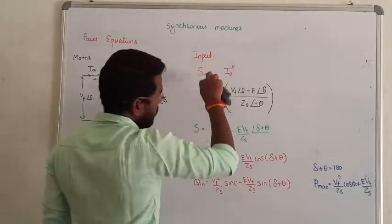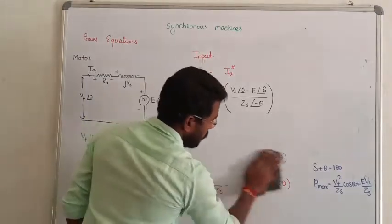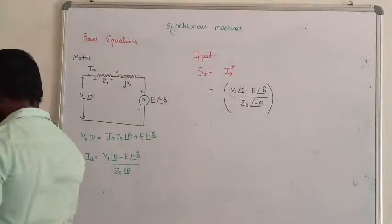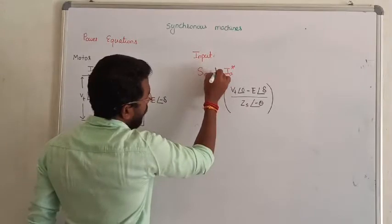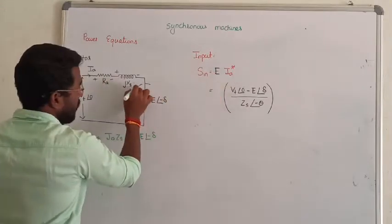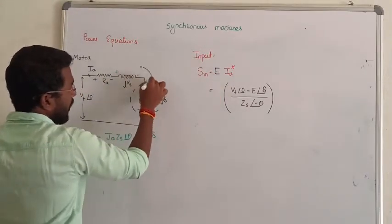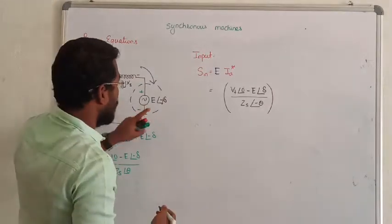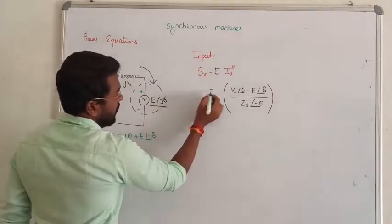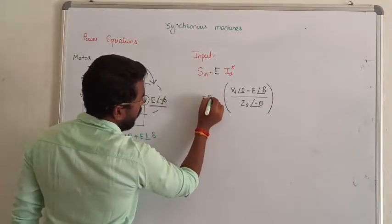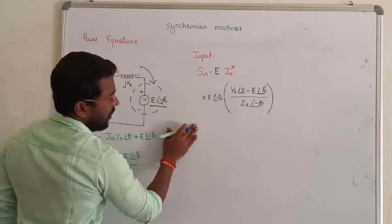Output power, just we have to replace VT by watts. So if you want to know the output power, let me explain. That is very simple. Again, we have to know here we have to consider the output power. This is the point where we are going to derive the output power. In case of motor, the value is that is E at an angle of minus del into I conjugate.